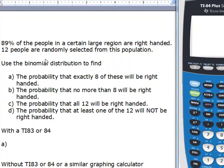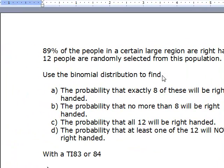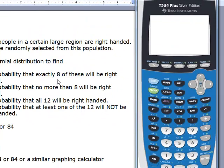We are using this graphing calculator to answer this question. We are looking at 12 independent selections and the probability of success in each one is 0.89. I have to obtain the probability that exactly 8 of them will be right handed.